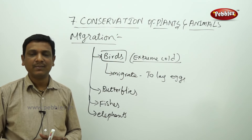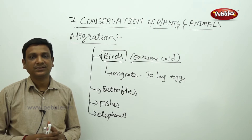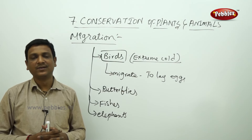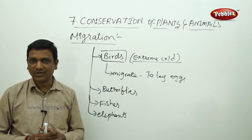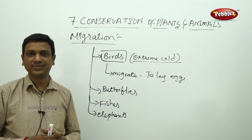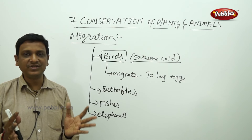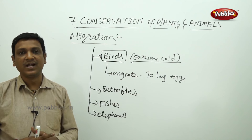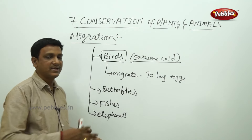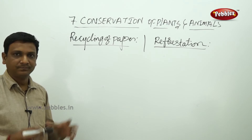When these birds migrate to new places to lay eggs, if those places are disturbed or damaged, their population decreases. For example, many birds migrate to Koleru Lake in Andhra Pradesh. But this lake has been damaged, polluted, and used for agriculture, causing the number of birds coming there to reduce. The places to which birds migrate must be reserved and protected to prevent the extinction of bird diversity.